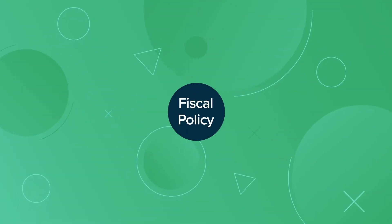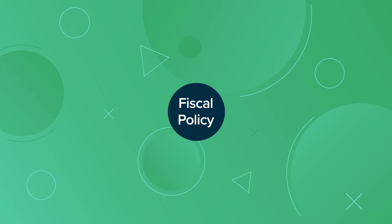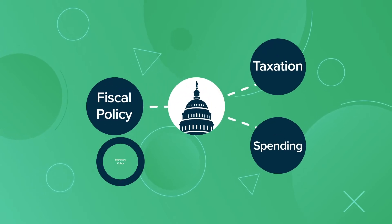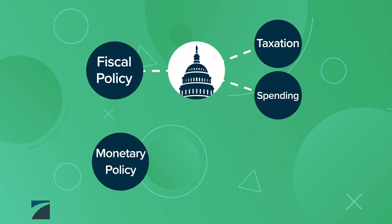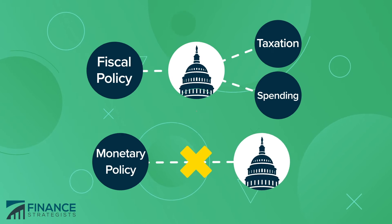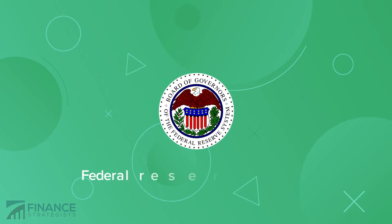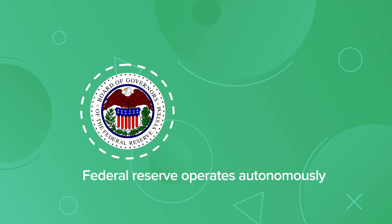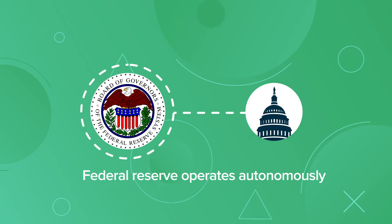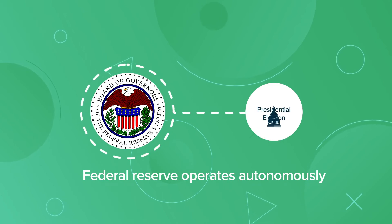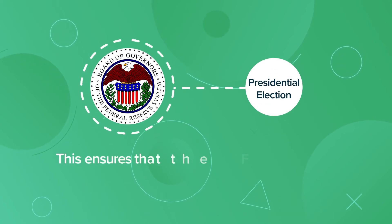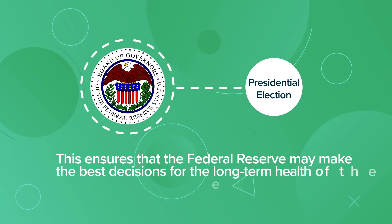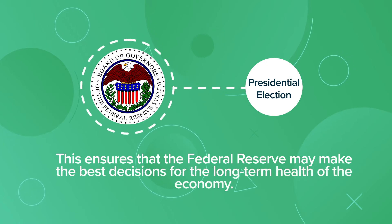Unlike fiscal policy, which pertains to policies on government taxation and spending, monetary policy is independent from the political process. The Federal Reserve operates autonomously in order to shield it from short-term political pressures, such as a presidential election. This ensures that the Federal Reserve may make the best decisions for the long-term health of the economy.